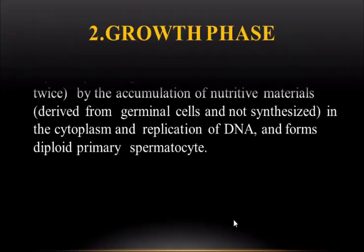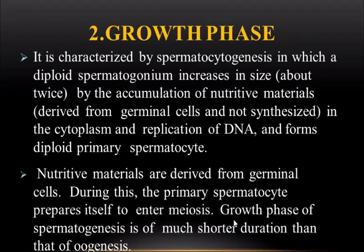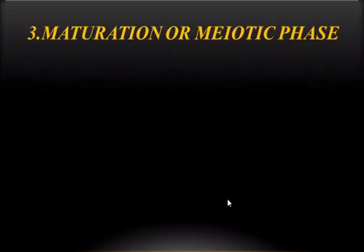The second phase is the growth phase, characterized by spermatocytogenesis, in which diploid spermatogonia increase in size by the accumulation of nutritive materials in the cytoplasm and replication of DNA, forming diploid primary spermatocytes. Nutritive materials are derived from germinal cells during this phase. The primary spermatocytes prepare themselves to enter meiosis. The growth phase of spermatogonia is of much shorter duration than that of oogenesis.